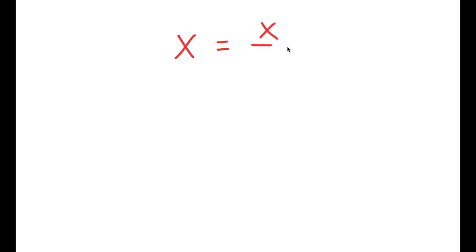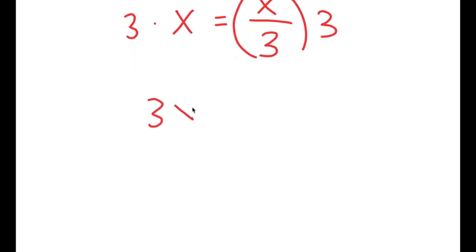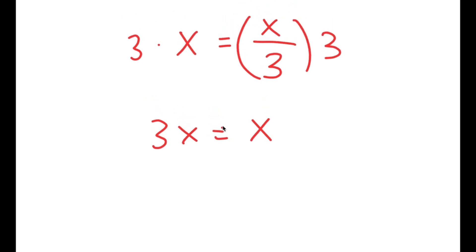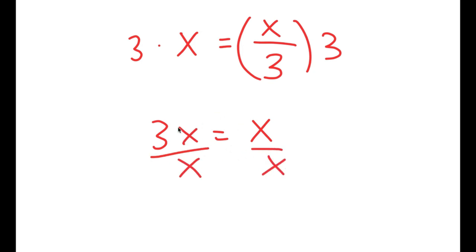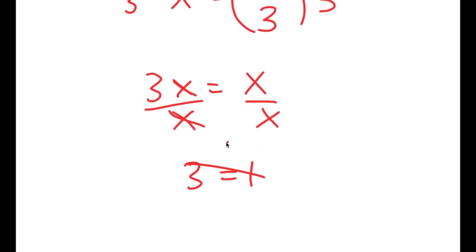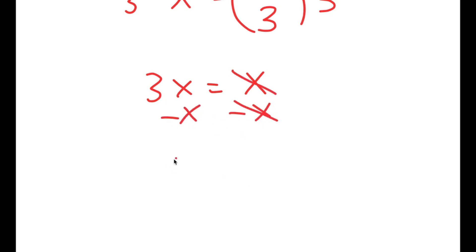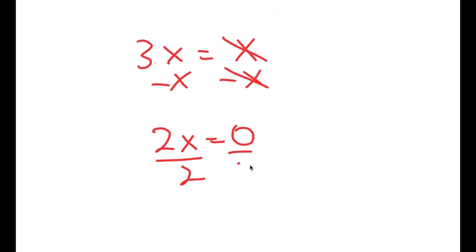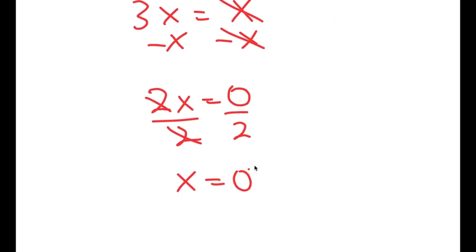In this video, I'm going to solve the equation x is equal to x over 3. To solve this, I'm going to first start by multiplying both sides by 3, so I get 3x is equal to x. Now, what most people would do is divide both sides by x — but if you do this, you get 3 equals 1, which is an incorrect statement. So instead, subtract x on both sides: 3x minus x is 2x, which equals 0. So x is equal to 0 divided by 2, which is 0.